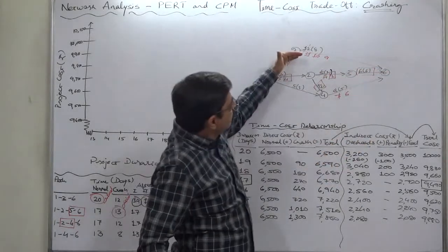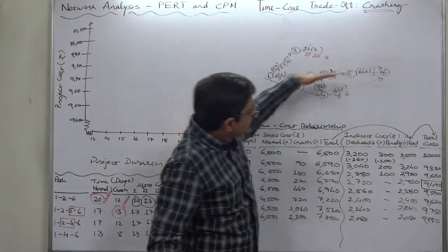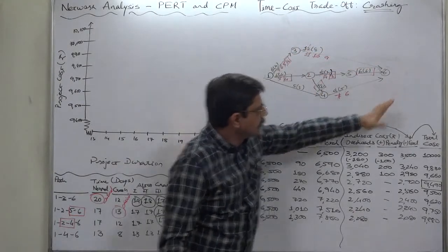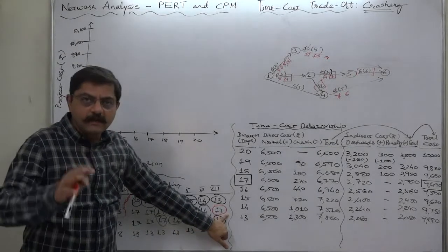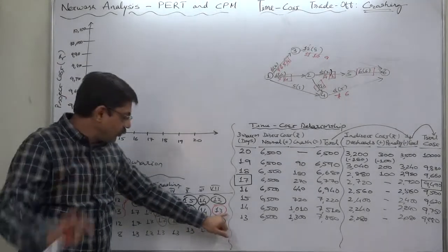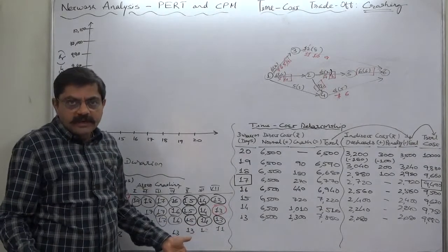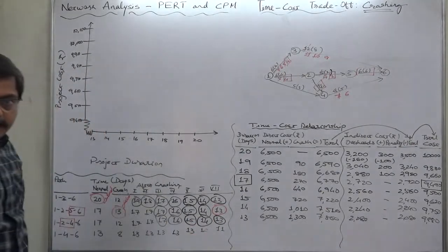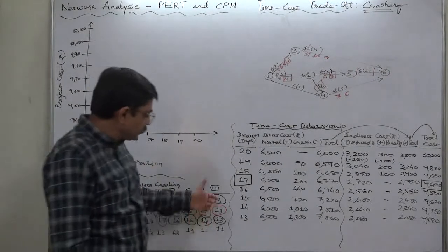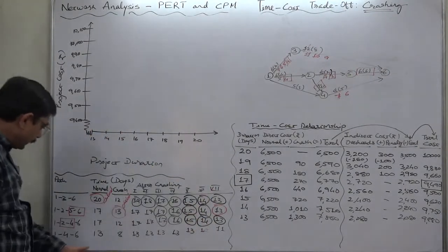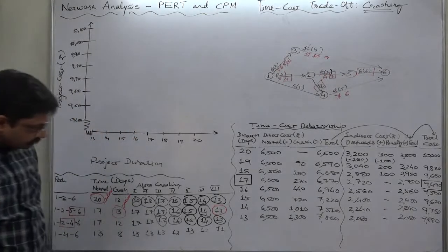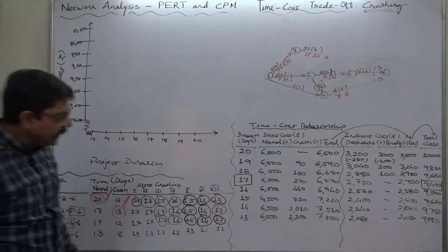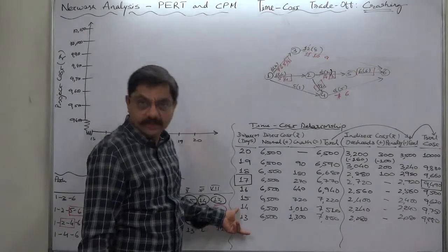So even if we crash these two critical paths the duration cannot be, rather critical path duration cannot be less than 13 days in any further trial. So we should stop crashing after this 7th trial and that's why we can say that this project cannot be completed in a duration less than 13 days.